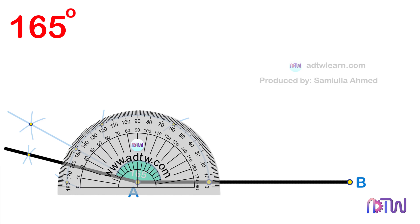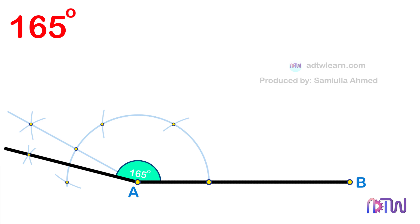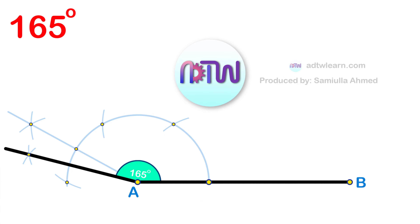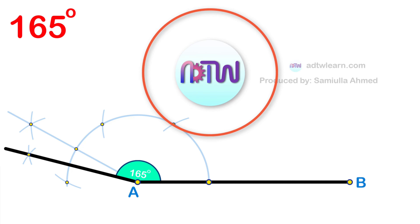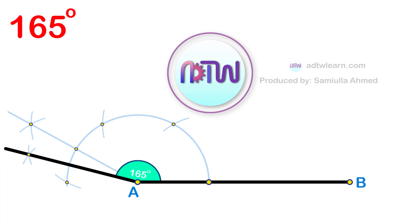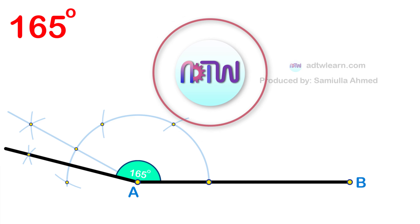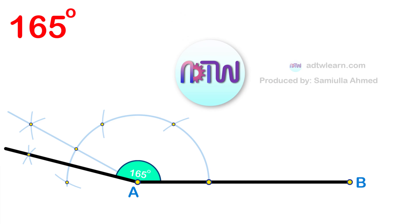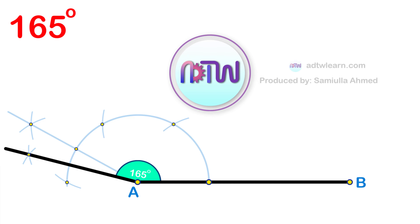Therefore, this line will be inclined at the required 165 degrees. You can cross-check by using a protractor. I hope you have understood how to construct an angle of 165 degrees. If you liked this video, please click the like button, subscribe to my channel adtwlearn, and turn on all notifications to get my latest videos.